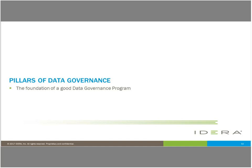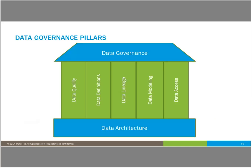I'm going to cover now the pillars of data governance — these are the good foundation for a solid data governance program. The five different pillars of data governance that sit on top of your data architecture are: data quality, data definitions, data lineage, data modeling, and data access. In the preceding slides I will go through a variety of different questions you should be asking regarding these different pillars.